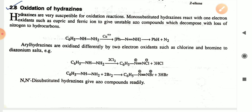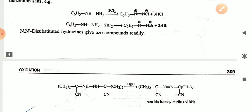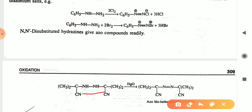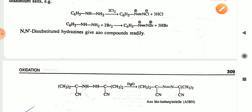In the presence of Br₂ it will also give the diazonium salt. N,N'-disubstituted hydrazines give the azo compound readily. Here you can see the hydrazine group losing two moles of hydrogen to convert into the azo bond. This disubstituted hydrazine in the presence of AgO or mercury oxide gives the azo compound — for example, AIBN (azobisisobutyronitrile).